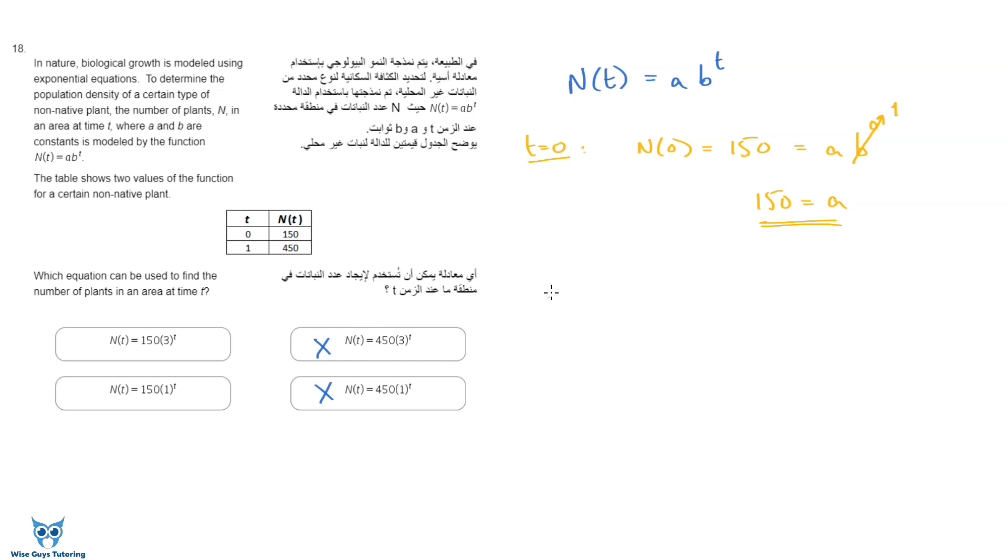Next thing we'll do is we'll try the second condition now. When t is equal to 1, when t is equal to 1, they told me that n is equal to 450. And that would mean that a, which is 150, times b to the power of t, which is now 1, equals 450. How do I solve for this? I'll divide both sides by 150.